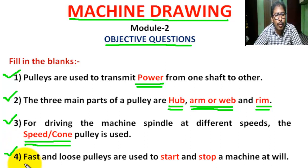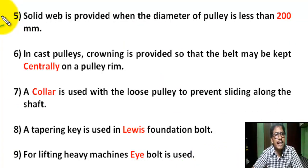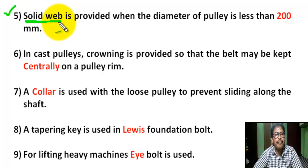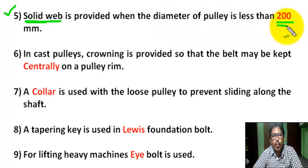Question 4: Fast and loose pulleys are used to start and stop a machine at will. Question 5: A solid web is provided when the diameter of the pulley is less than 200 mm — that is, when the pulley has no arm.